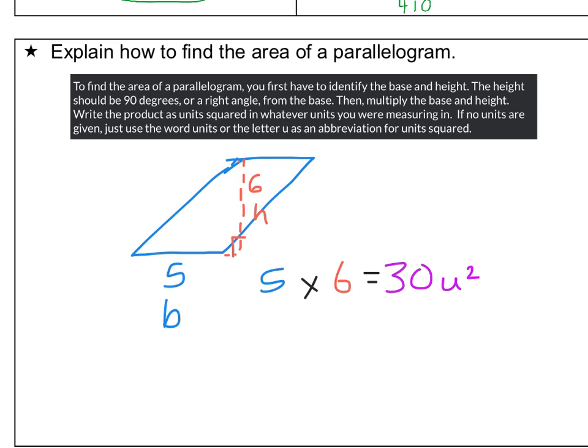Units are the words or the measuring tool or measuring system you're using. So inches, feet, yards, miles, meters, kilometers, any of those different types of distances would be my units. And then I square it because I'm literally doing that unit times that unit. And so I can write square S-Q-U-A-R, or I can just do number 2.